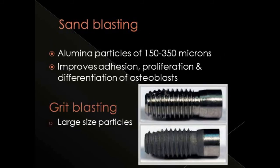In sandblasting, the implant surface is blasted with alumina particles of size ranging from 150 to 350 microns. This improves adhesion, proliferation, and differentiation of osteoblasts by forming a mechanical bond and increasing surface roughness and surface area. In grid blasting, larger particles are used to create larger irregularities. Other particles that can be used include titanium dioxide, zirconia dioxide, and hydroxyapatite. Blasting is always followed by acid etching to remove residual blasting particles that may inhibit osseointegration.